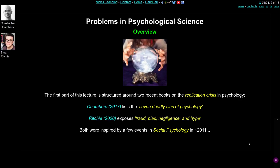For this lecture I read a couple of books — both very recent — and I've used them because they cover a lot of the same ground. They're a good pair of books to work from and I've printed some chapters in the lecture materials. The first part of this lecture is structured around these two books, both on what we're going to call the replication crisis, and we'll talk more about that later.